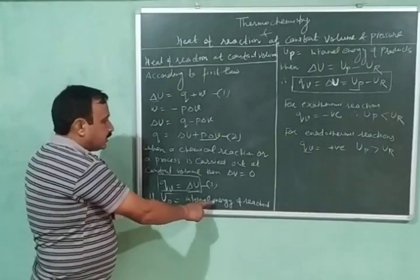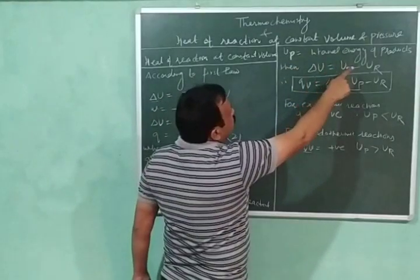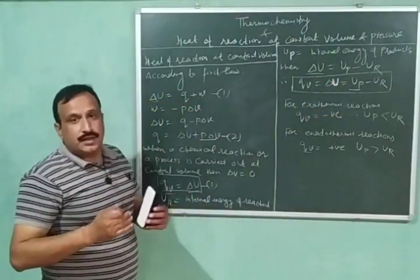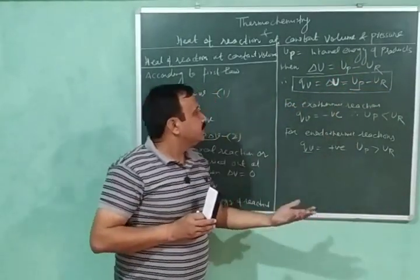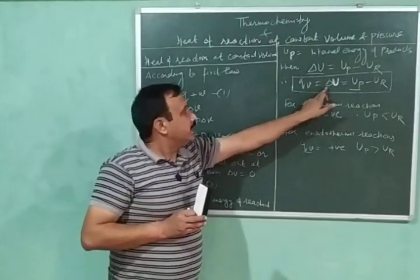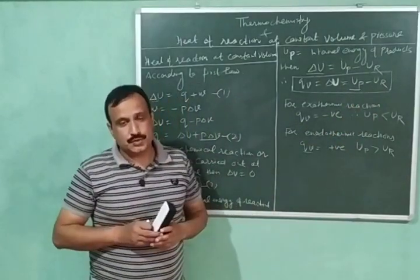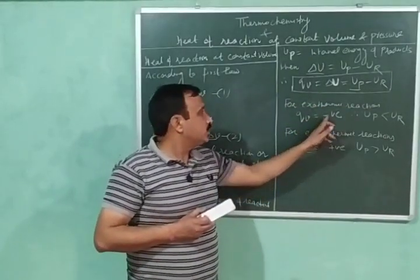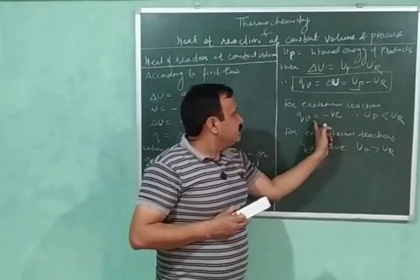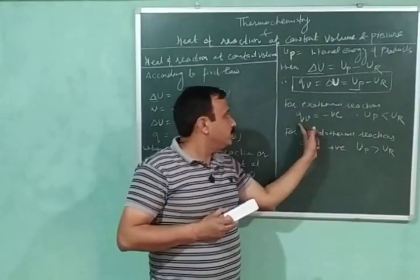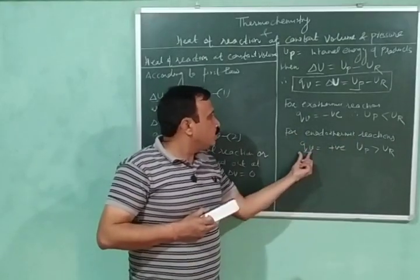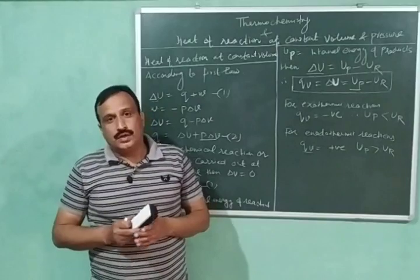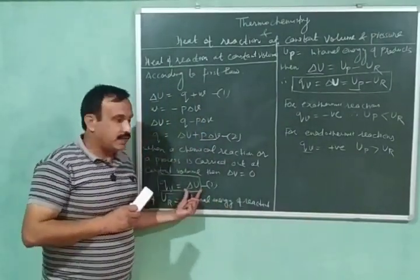If Ur is the internal energy of the reactants and Up is the internal energy of the products, then ΔU = Up − Ur. So qv = ΔU = Up − Ur. For an exothermic reaction, qv is negative, which means Up < Ur. For an endothermic reaction, qv is positive, meaning Up > Ur. So the heat change at constant volume equals the change in internal energy.